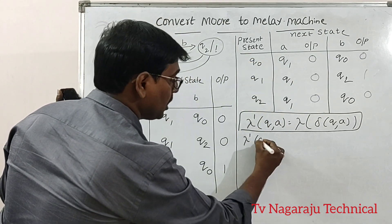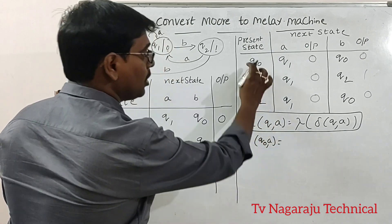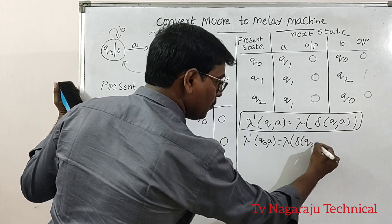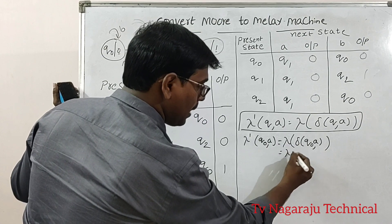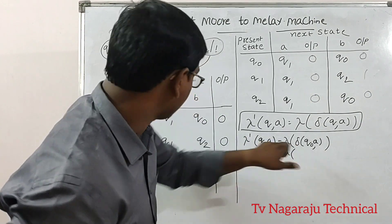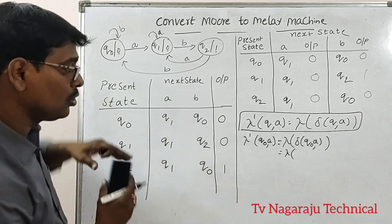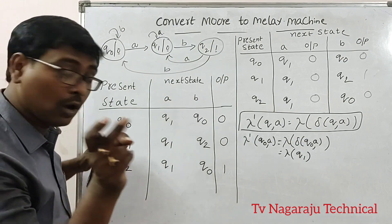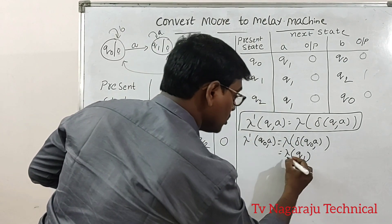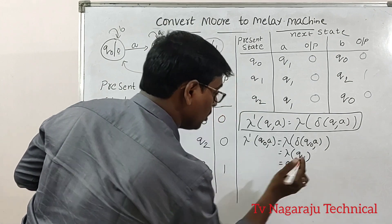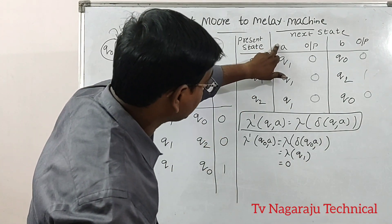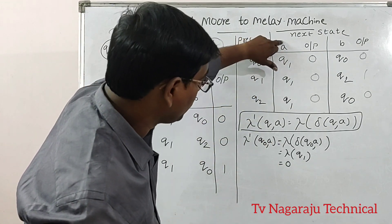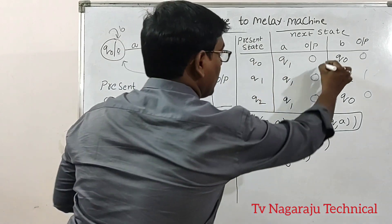Apply the formula for each state and input. λ'(Q0, A): Q0 on A moves to Q1, so λ(Q1) = 0. Therefore the output is 0. For the Mealy machine, for state Q0 with input A, the output is 0. Next, λ'(Q0, B): Q0 on B moves to Q0, so λ(Q0) = 0. Output is 0.